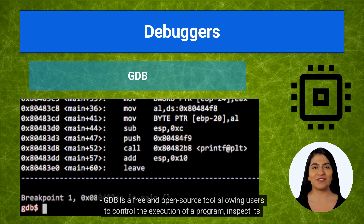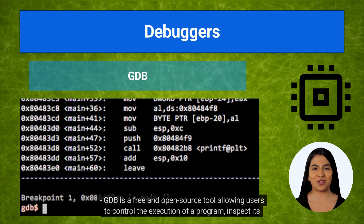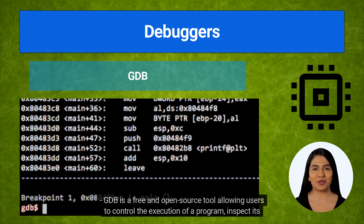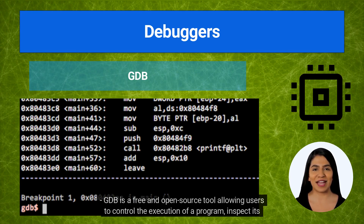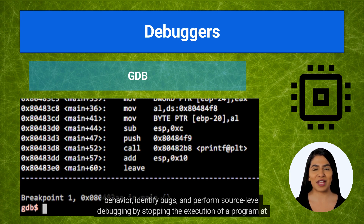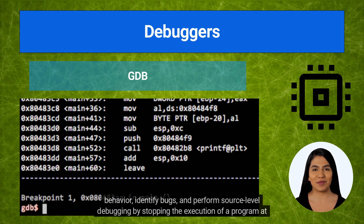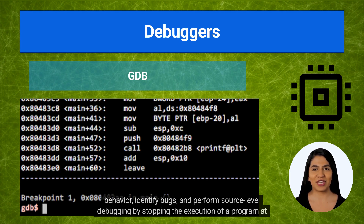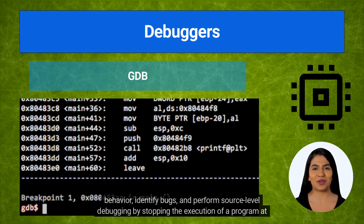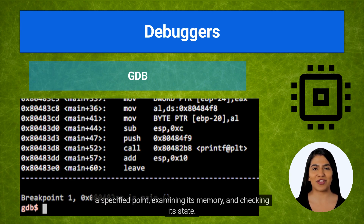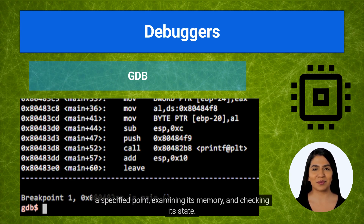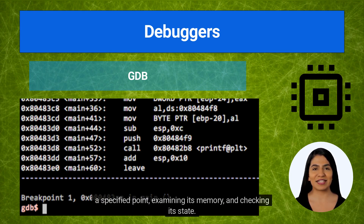GDB is a free and open-source tool allowing users to control the execution of a program, inspect its behavior, identify bugs, and perform source-level debugging by stopping the execution of a program at a specified point, examining its memory, and checking its state.